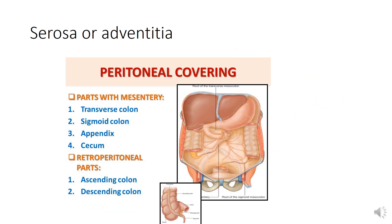The serosa or adventitia is the last layer of the colon. The transverse colon and sigmoid colon are completely surrounded by serosa as they are covered completely by peritoneum. The anterior surface of the ascending and descending colon is covered by serosa, while their posterior surface is covered by an adventitial layer of dense fibrous connective tissue. The serosa of the colon is characterized by numerous small protuberances called appendices epiploici, which are composed of fatty tissue.